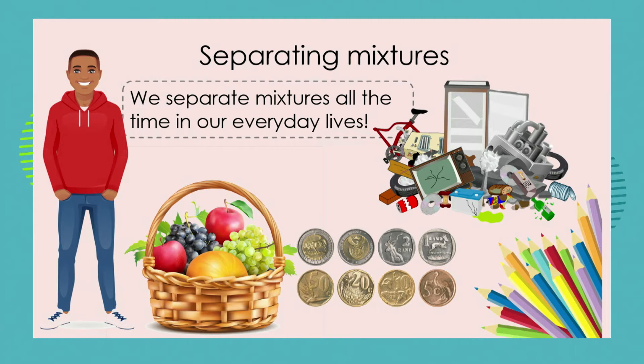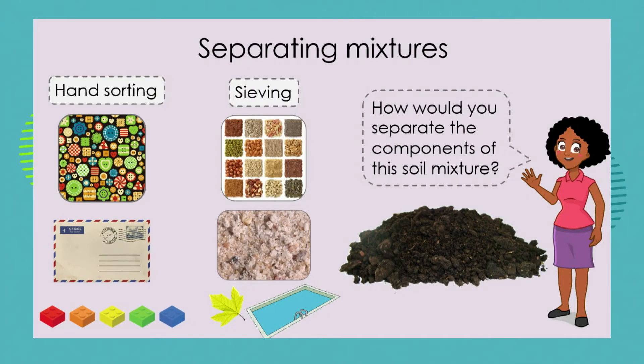We've learned that in our everyday lives we separate mixtures all the time. We go into our purse or wallet and we're separating different coins and money from each other in order to pay people. We are selecting things from a fruit basket if we want to choose our own fruit. One of the ways most familiar is the idea of hand sorting.